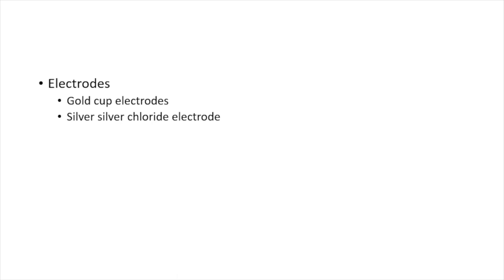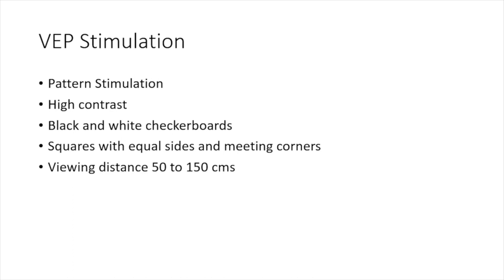Regarding electrodes and stimulation: the pattern stimulation should have high contrast — at least more than 80% contrast difference between the black and white checkerboards, with 100% being better. The squares should have equal sides, meeting corners, and viewing distances of 50 to 150 centimeters. The stimulus difference should occur without change in average luminance, meaning the brightness of the screen should not change when the pattern reverses.